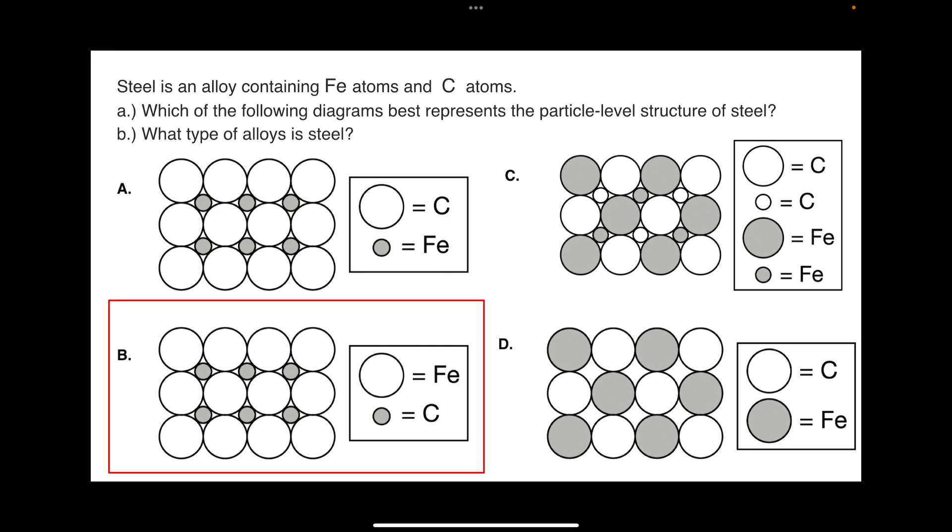Welcome back. You should have selected B. This question requires a little bit of knowledge of periodic trends. We know from the periodic table that carbon is much, much smaller than iron because it's much higher up and further to the right than iron.